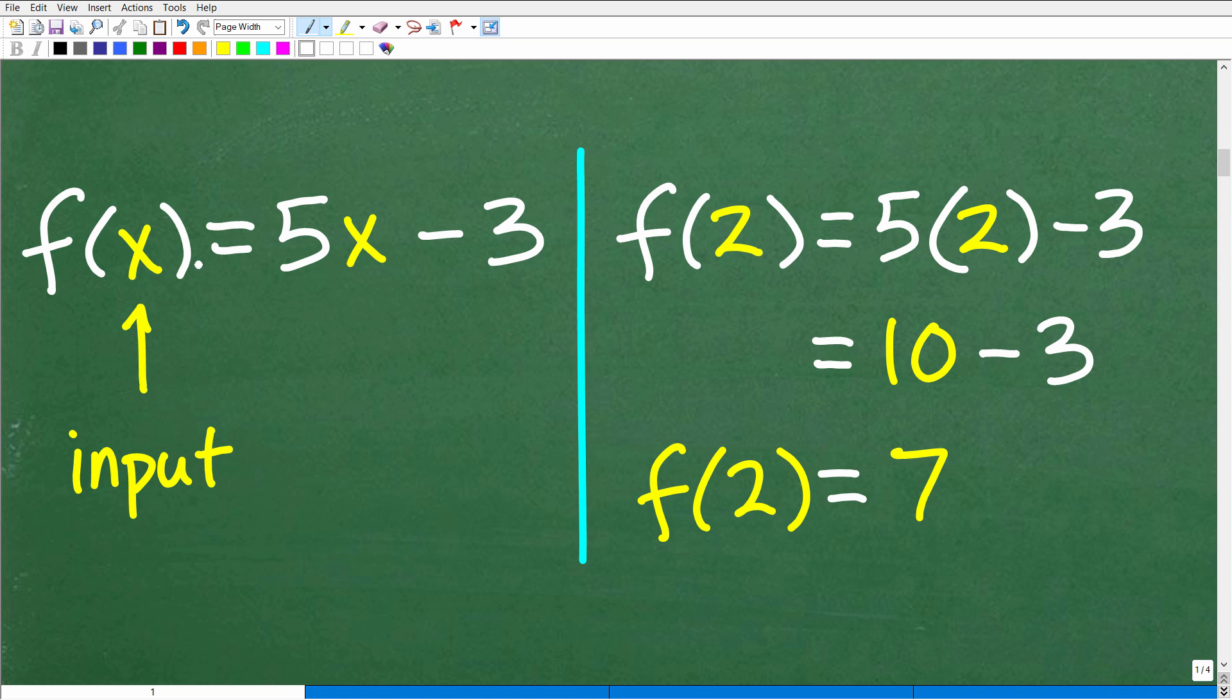All right. So here is our function, f(x) is equal to 5x minus 3. But basically what a function is, it's just a rule where we plug in an input value and we get an output value. So here, the x, whatever this x is right here, it's the same as this x. But this is our input value. So we plug in numbers into this function. We'll plug in a number here, which means whatever we plug in here, we're going to replace this x. It's the same variable over here. And then we'll do this math.